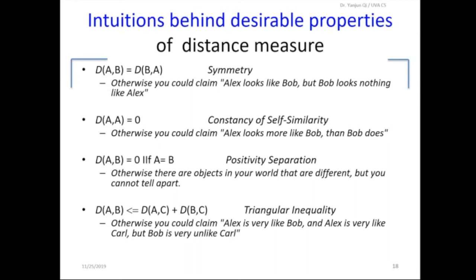And the second property is called self-similarity, which means if you do the distance measure of a sample versus itself, it gives distance zero. And this is an important property, because if this doesn't hold, you may have Alex looks more like Bob than Bob itself, which is odd, right?